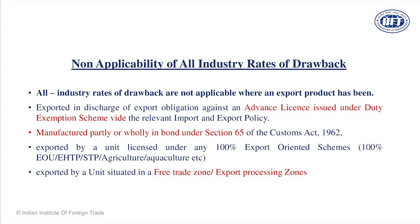Goods manufactured in bond under Section 65 — Section 65 specifies the bonding of EOU (Export Oriented Unit), EHTP (Electronic Hardware Technology Park), BTP (Biotechnology Park), and STPI (Software Technology Park of India). These are dedicated exporting zones where whatever is manufactured is exported out of India. And if goods are manufactured in a free trade zone — i.e., Special Economic Zones — you are not eligible for duty drawback.